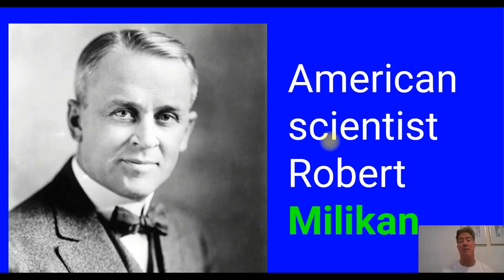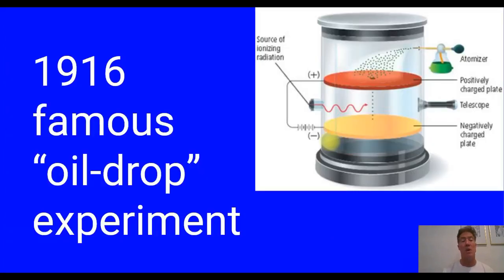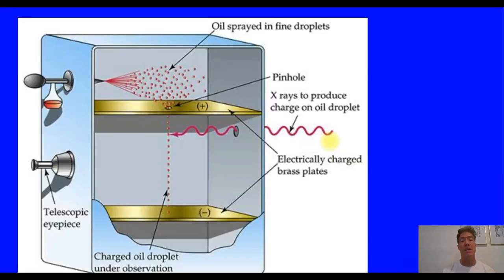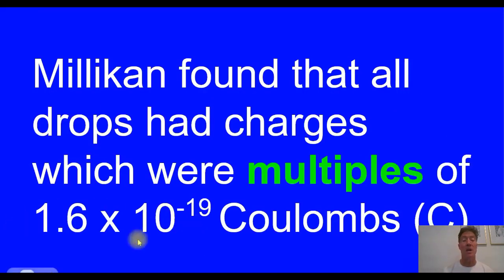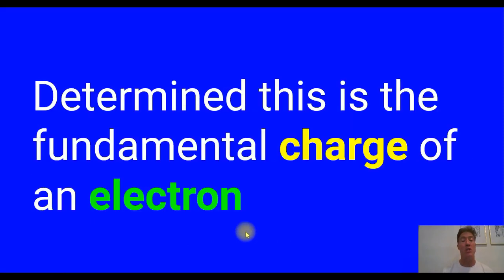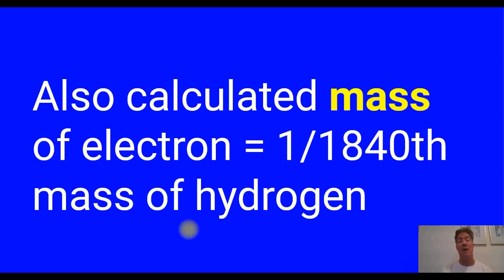Then another scientist, an American named Robert Millikan, performed his famous oil drop experiment in 1916. He took oil droplets as tiny as he could make them — they would get a charge on them — and then tried to suspend them between a positive and negative plate to calculate the amount of charge needed to counterbalance the charge on the oil. He found that no matter what size the drop, all the oil drops had charges which were multiples of a fundamental number. That must be the charge of an electron. He also calculated the mass of an electron, and it turned out to be 1/1840th of the mass of hydrogen.